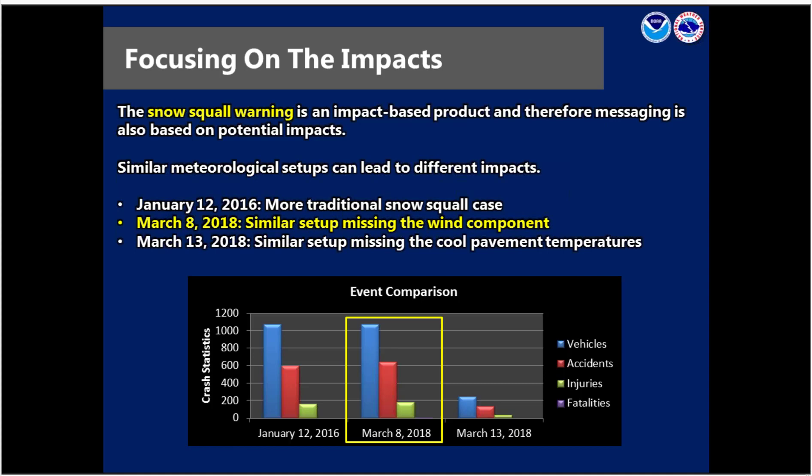With the snow squall warning coming on board, it's an impact-based product and the messaging is based on impact. We have three different cases on screen: a more traditional snow squall case, a similar setup missing the wind component, and another missing the cool pavement temperatures. This shows that very similar meteorological setups can have vastly different impacts. We're focusing today on the March 8, 2018 event, showing that even without the typical wind component you can still have just as many impacts as traditional snow squall cases.